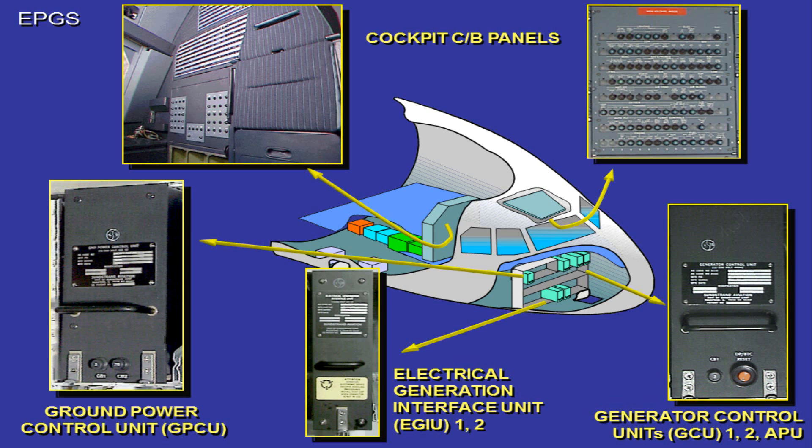The electrical generation interface units, EGIU, are used by the ECAM to display the AC electrical power parameters. The generator control units, GCUs, protect and control the aircraft network and generators. The main CB panels are located in the cockpit.